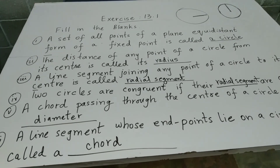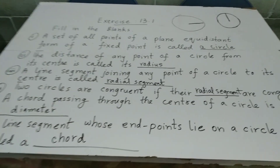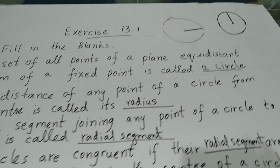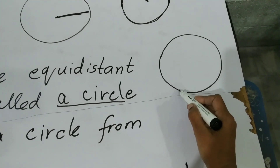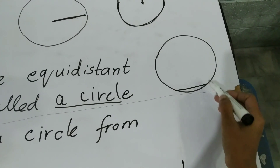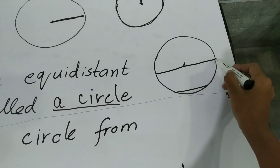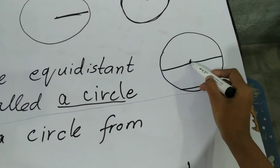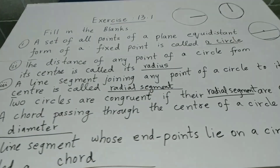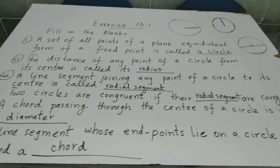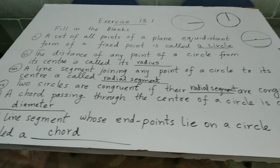Number fifth: a cord passing through the center of a circle is called a diameter. Cord वो होती है जो circle के two points को touch करते हुए जाती है। लेकिन अगर वो line center point से पास करे, तो यह diameter भी है और cord भी है.